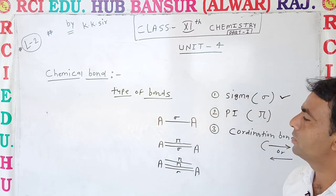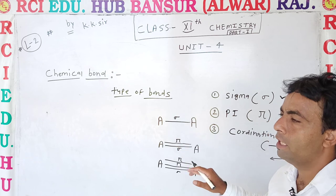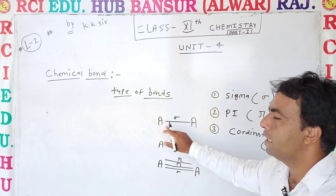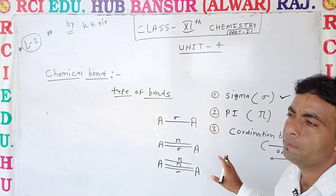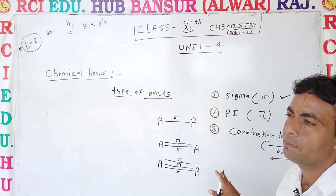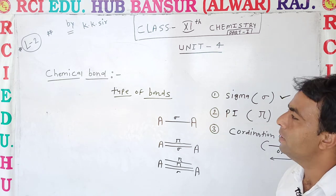On the basis of the number of atoms involved, bonds may be described as mono, di, tri, penta, hexa, octa, and so on.